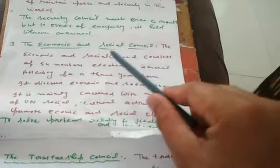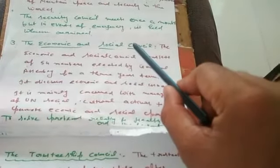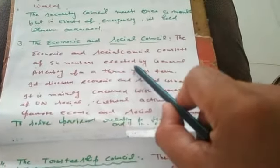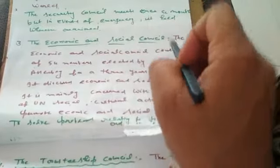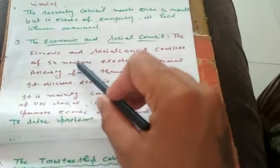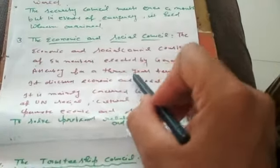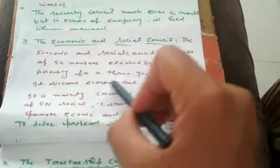In this video we will study the remaining four organs of the UN. The third organ is the Economic and Social Council — yaani ki Aarthik aur Samajik Parishad ke naam se isko jaana jaata hai. The Economic and Social Council consists of 54 member countries, elected by the General Assembly for a three-year term.